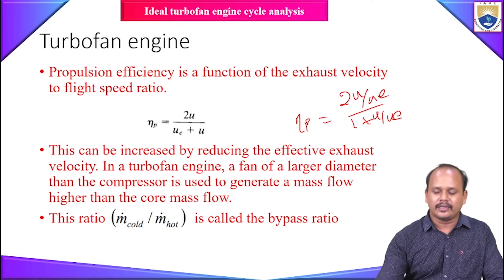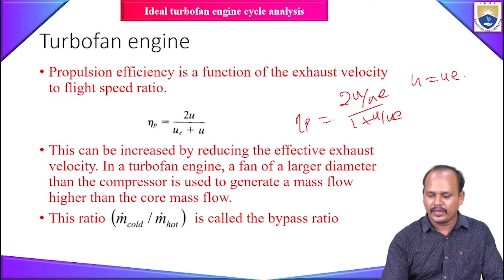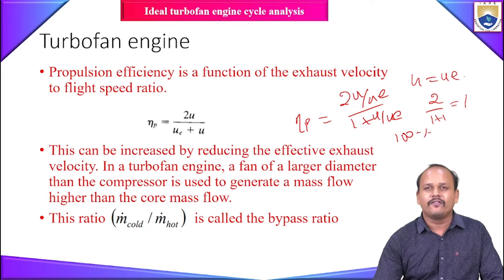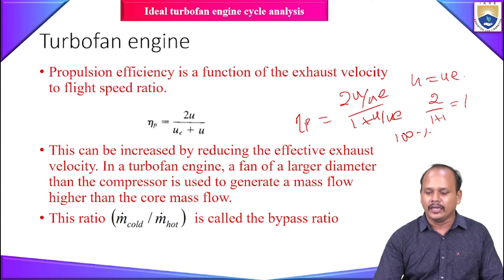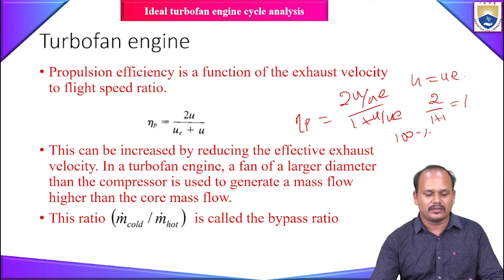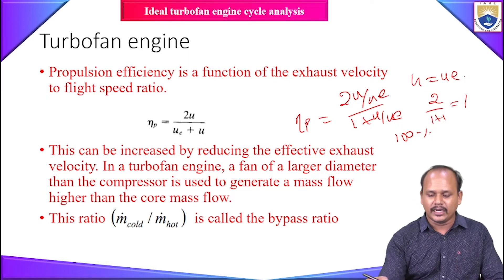From this equation, we can see that maximum propulsive efficiency occurs when u is equal to u_e. Substituting u equal to u_e gives 2 divided by (1 + 1), which equals 1 — meaning 100% efficiency when flight speed and exit flow velocity are equal. This means that as the difference between flight speed and exit velocity increases, the propulsive efficiency of the engine keeps decreasing.